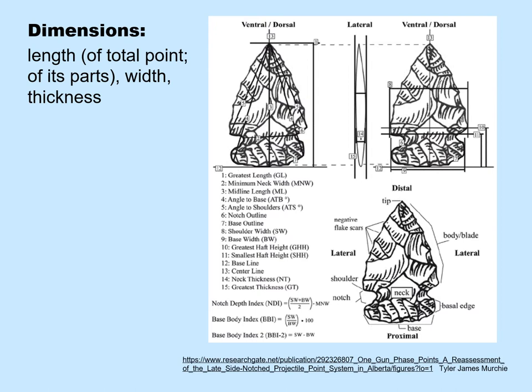Dimensions at their most simple would be the length — the total length of the point — the widest width, and the thickness. But as you can see from this diagram, potentially you could take many different dimensions, including the dimension of just the blade alone and of just the hafting area.